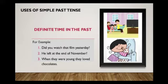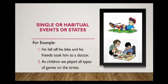Another example: 'He left at the end of November' — we're talking about a month which is over now. And 'When they were young, they loved chocolates.' When we specify a time in the past, we use simple past tense.